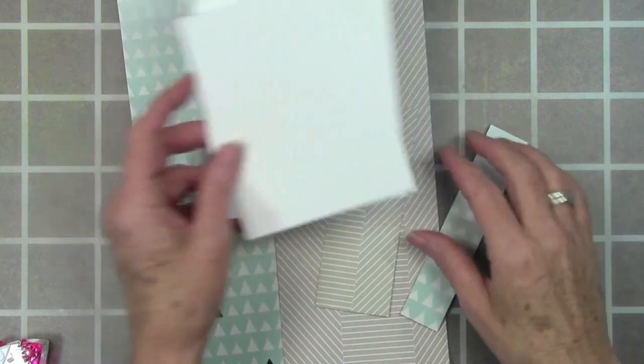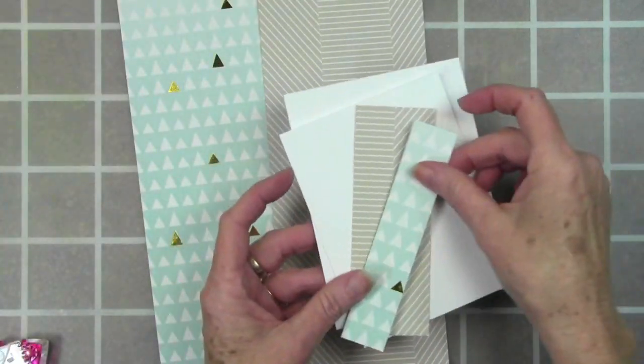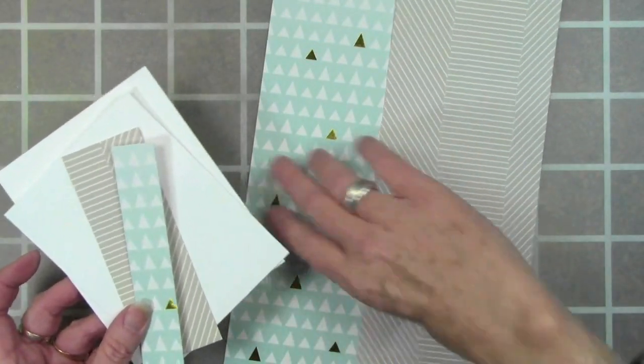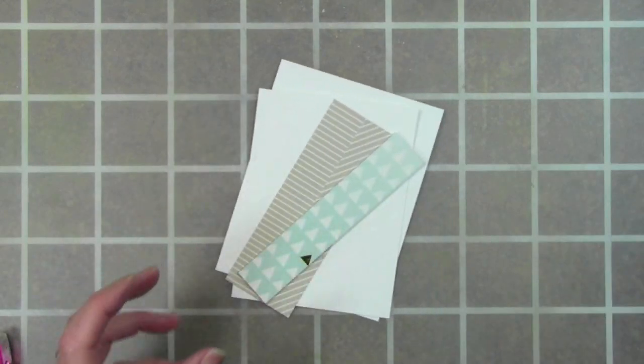I've started my card out by creating a panel and a top folding card with white cardstock and also cut a couple strips from some of the cardstock that's included in the kit.